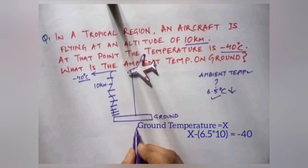So x minus 6.5 into 10. Why 6.5 times 10? Because for every kilometer 6.5 degree celsius decreases. So that will give us is equal to minus 40 degree celsius, that is the temperature where the aircraft is flying.